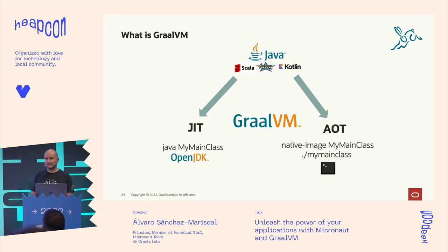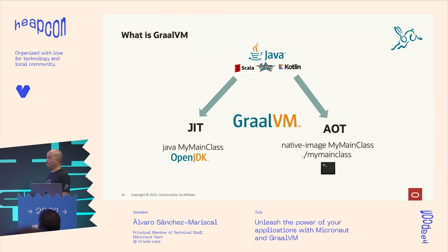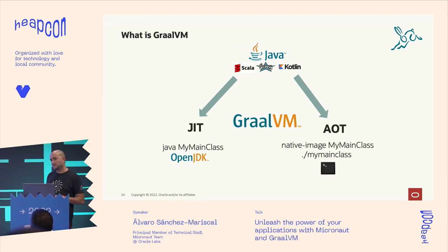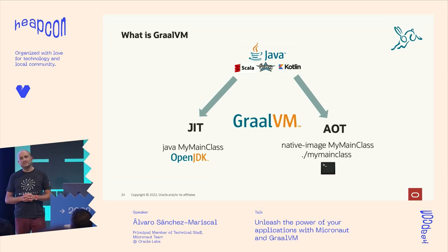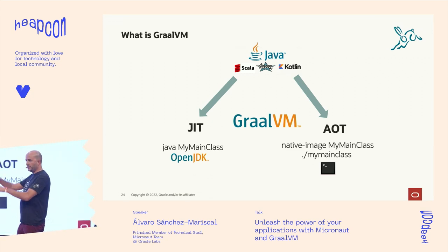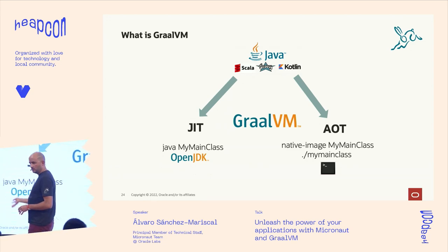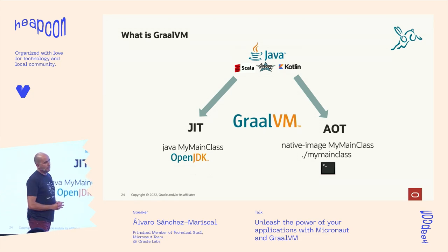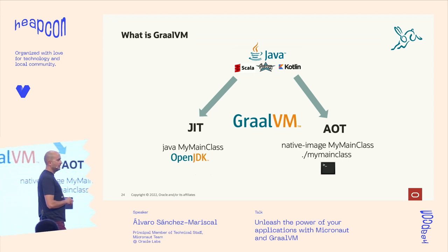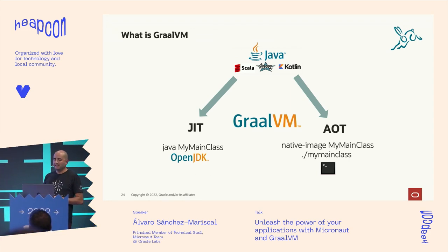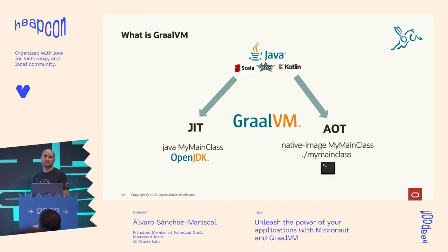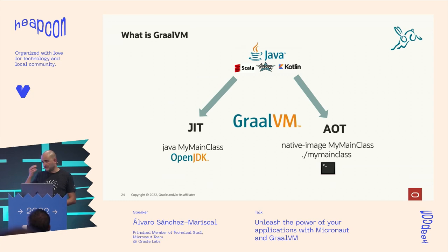Or you can use the native image component to produce a binary of your Java application. GraalVM starts from your main class, traverses all your code to detect the application footprint — how many classes and methods are reachable — and produces a closed-world version of your application as machine code. So it's a native binary — on Mac you get a Mac binary, on Linux you get a Linux binary.